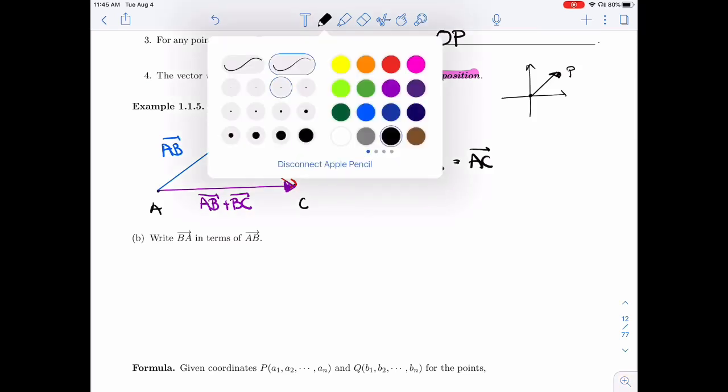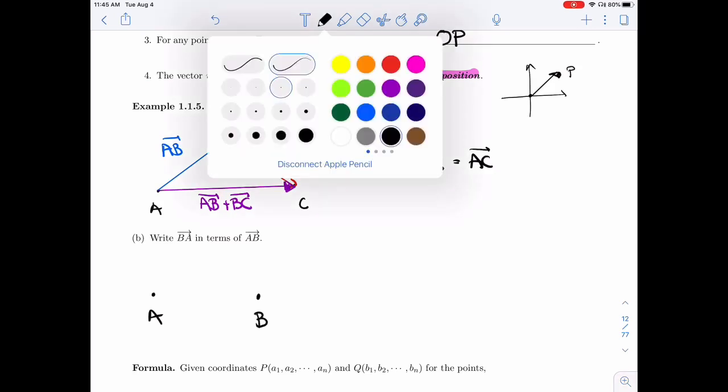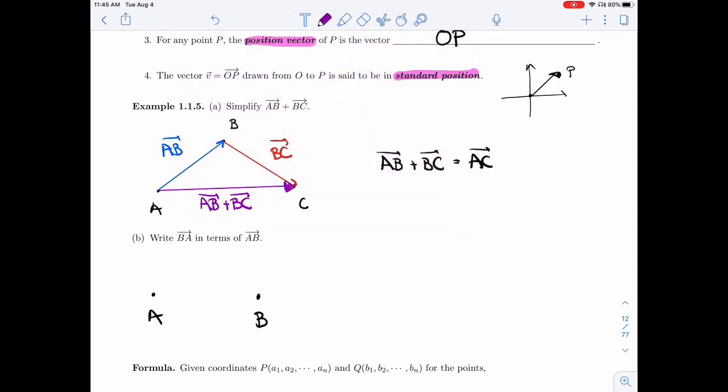All right, let's look at this a bit more. If I have AB here, then we could form two different vectors. We can look at AB, and we could look at BA.